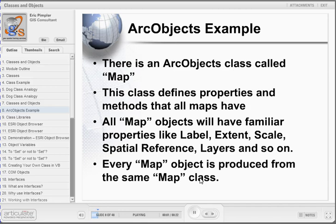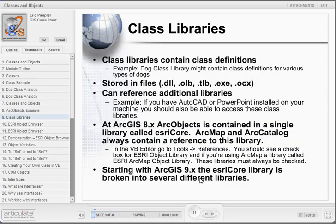Let's take a look at an ArcObjects example. In ArcObjects, we have a class called Map. This class defines properties and methods that all maps have, such as label, extent, scale, spatial reference, layers, and many others. Every map that is produced will have these same properties. However, each map object can have a uniquely set property. Now that you have a basic understanding of classes and objects, let's move on to a few other related issues.